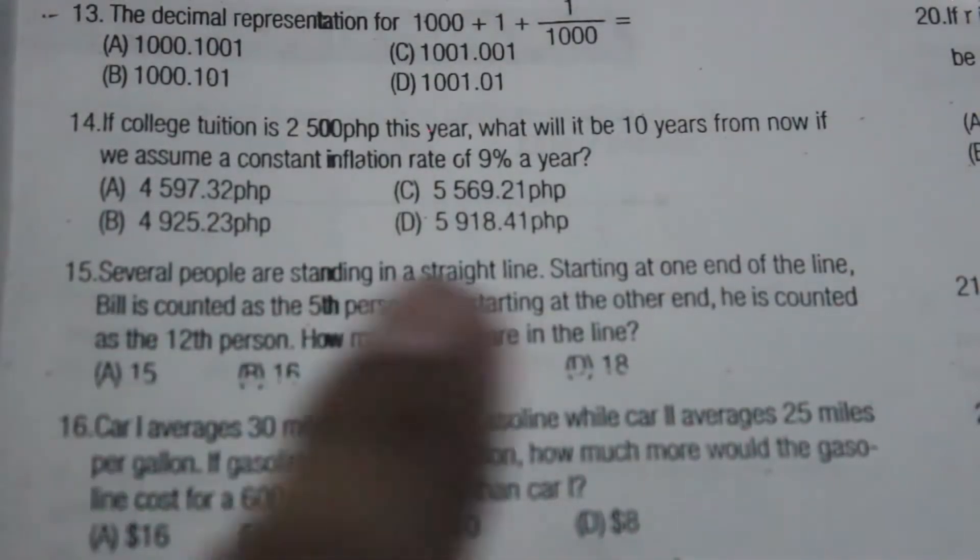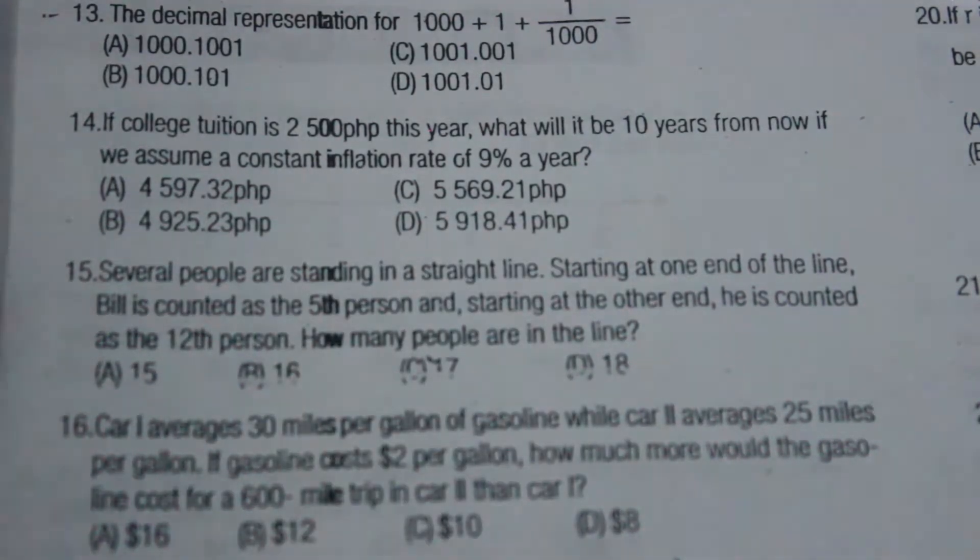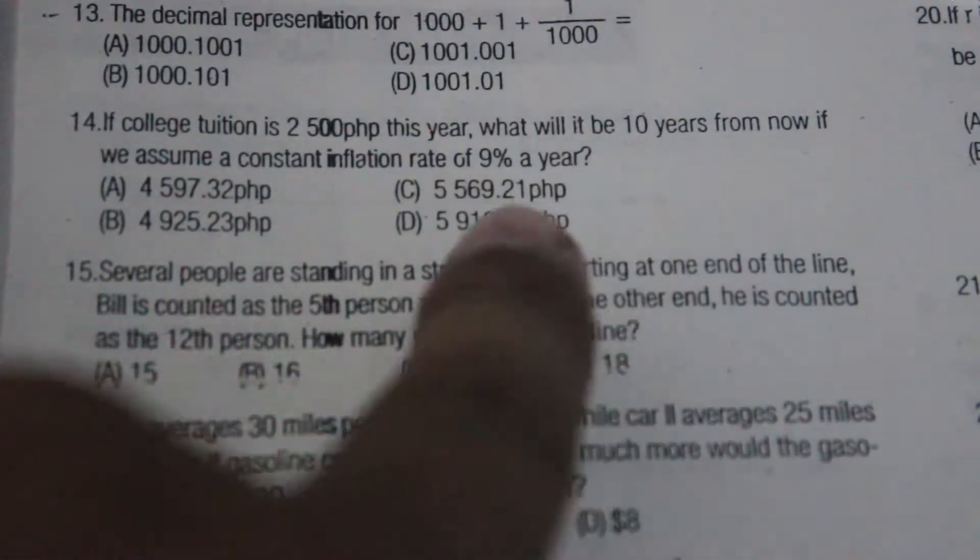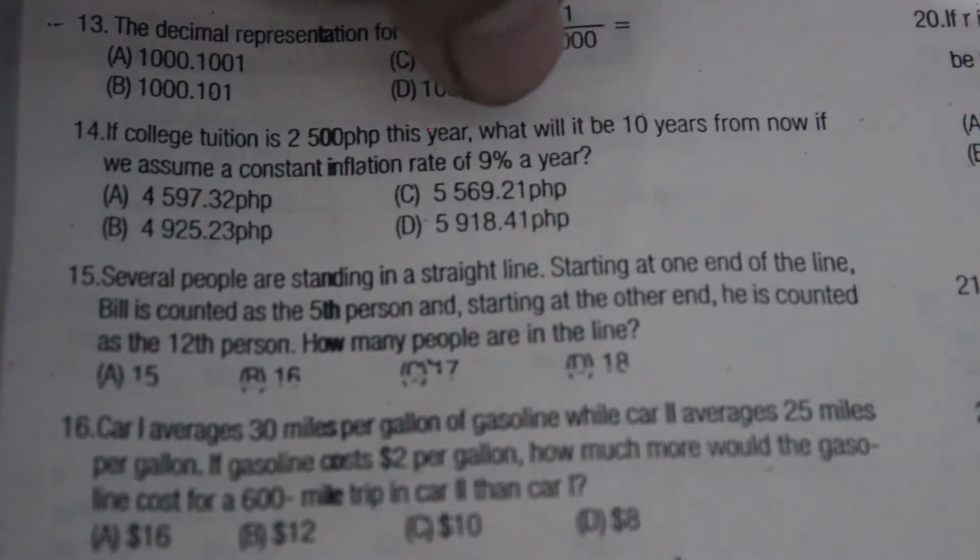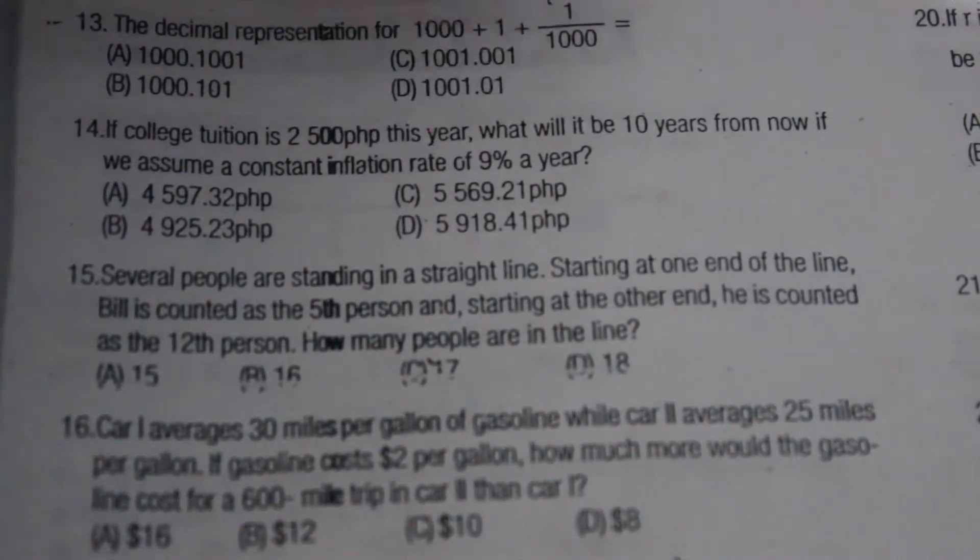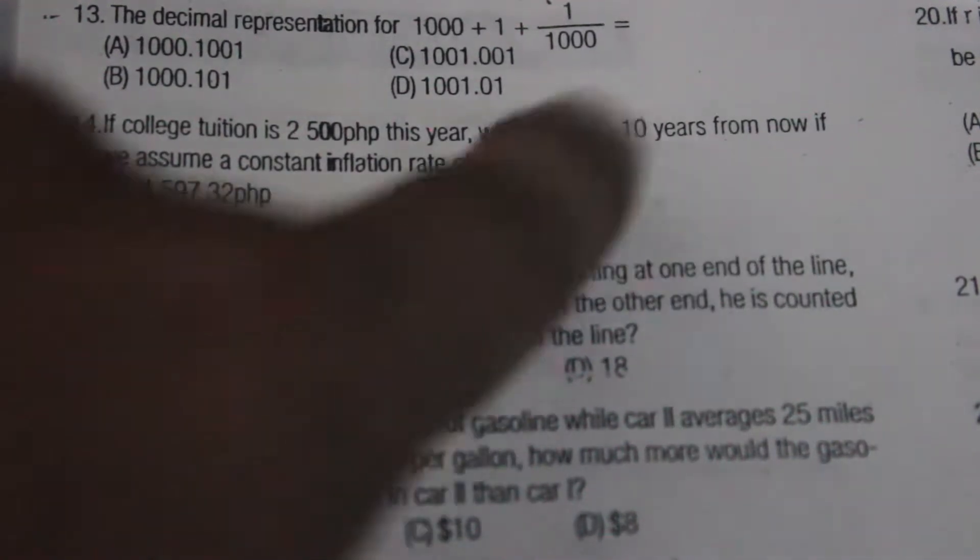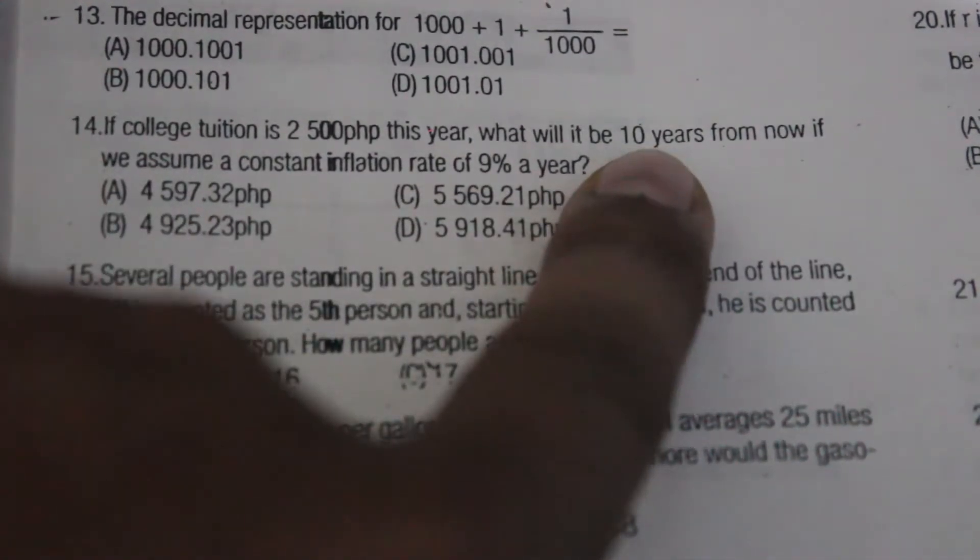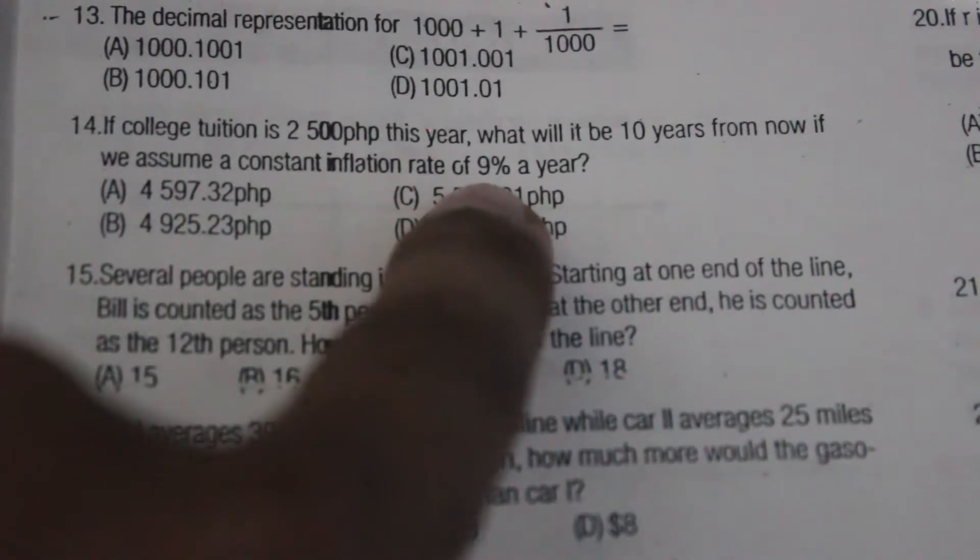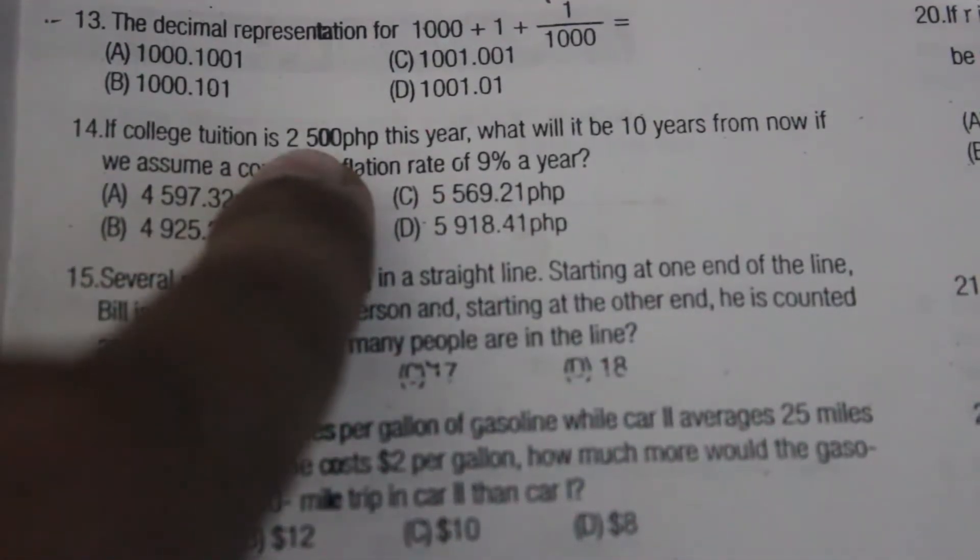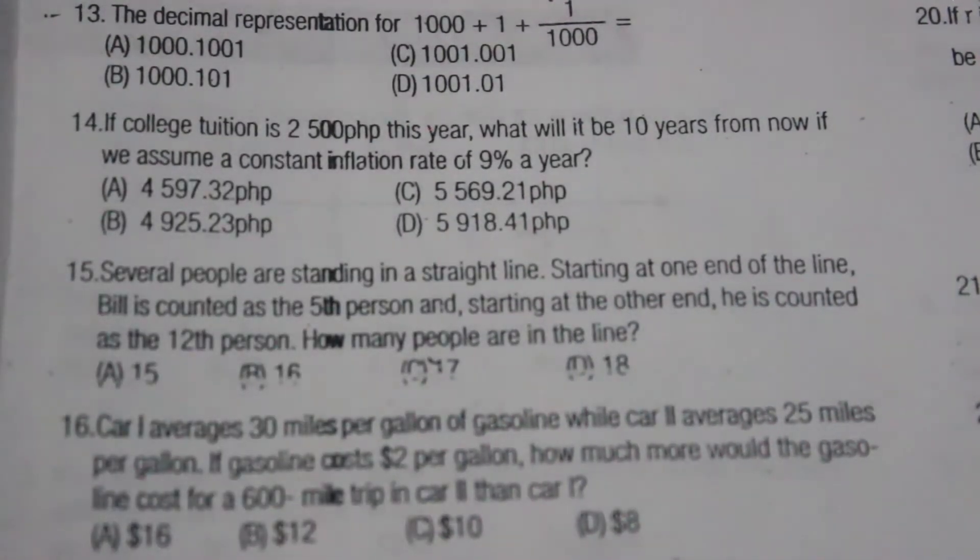The tip here guys, when you read the problem make sure that you can find the n and your t. Here I can find my n, that is a year, and I can also find the time which is 10 years. I can also find my r, that's 9%, and the principal, which would be my $2,500.